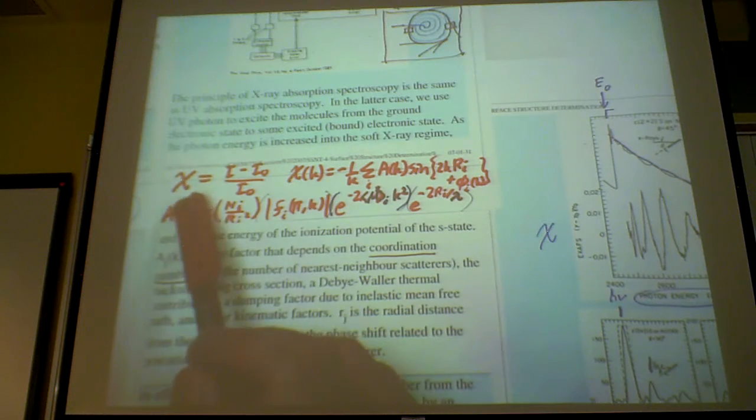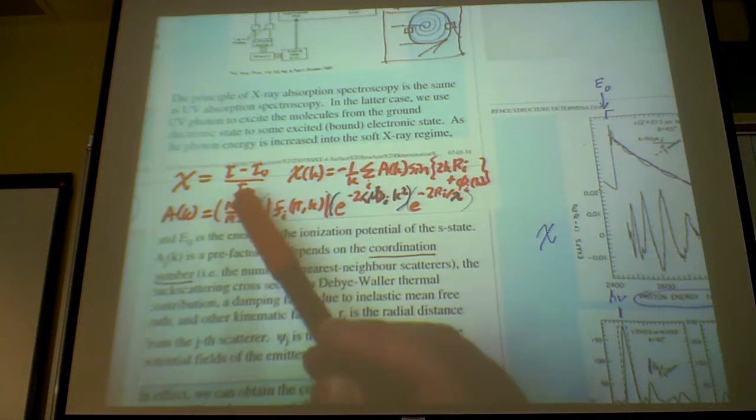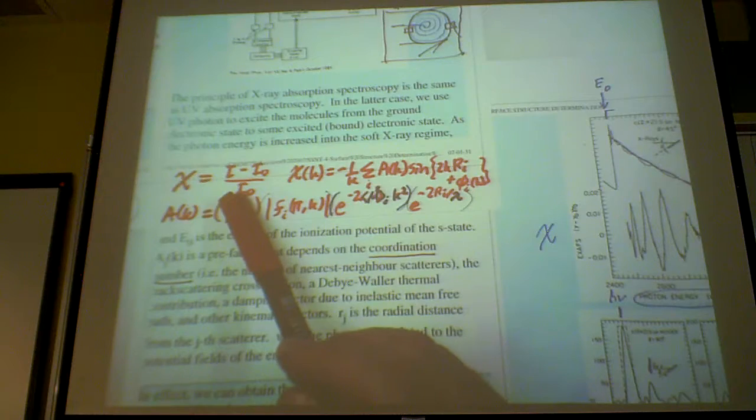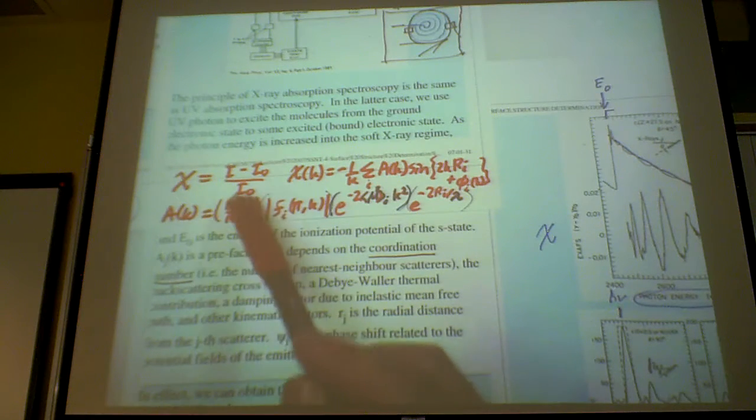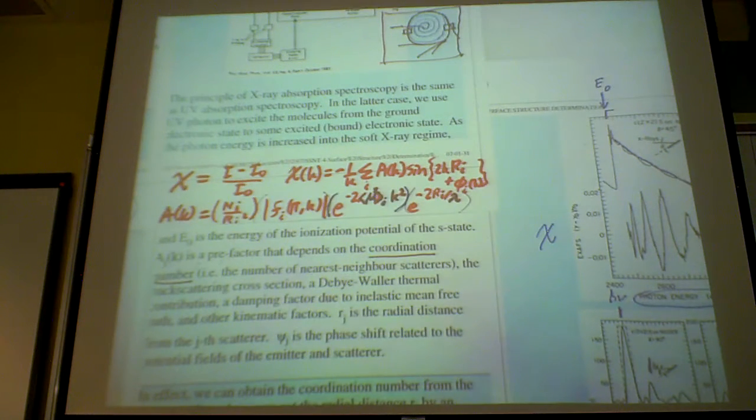So you're doing scattering theory that there is a standard program to account for this. You just have to enter temperature and so-called Debye-Waller factors, your mean free path, things like that. And then you generate a number, and this number will depend on, will then allow you to figure out what is this N, the coordination number that you have.